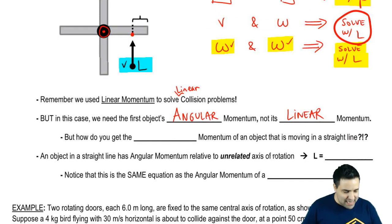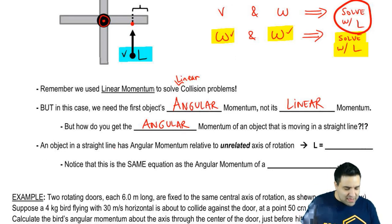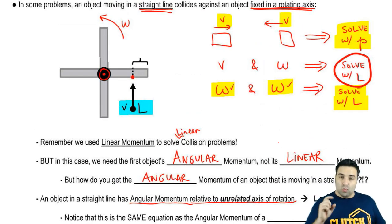But the question is, how do we get the angular momentum, how do you get an angular momentum of an object that's moving in a straight line? This object isn't even rotating. How do I find its rotating momentum?